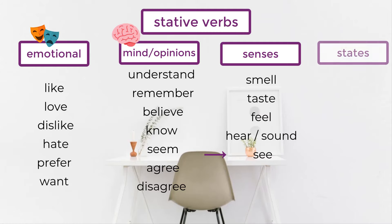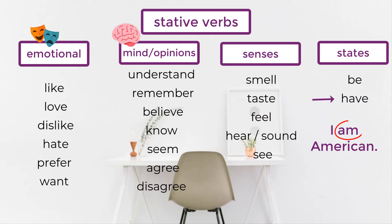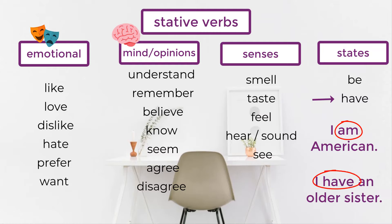And states. States are things that never change or will not change soon. Very common stative verbs are 'be' and 'have.' For example, 'I am American' — this won't change. 'I have an older sister' — this won't change.